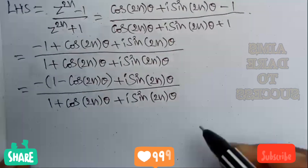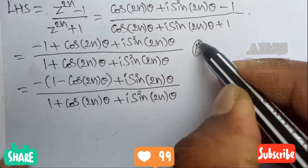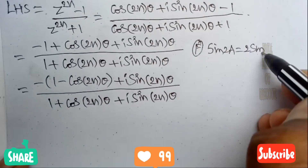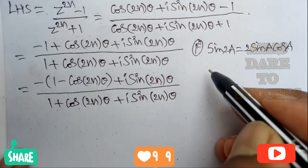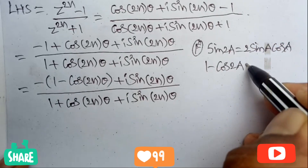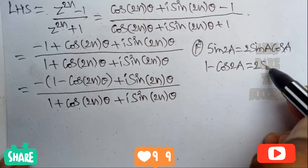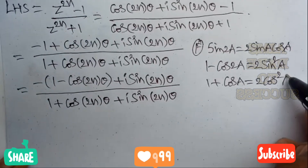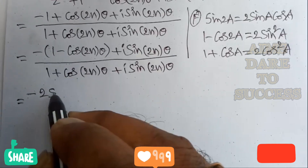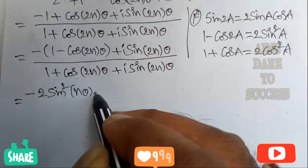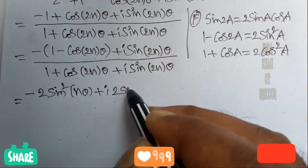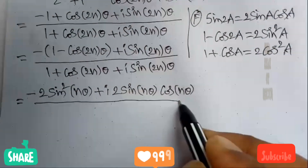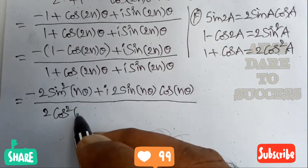Here I want to write three formulas from trigonometry. First formula: sin 2a equals 2 sin a cos a. Next: 1 minus cos 2a is equal to 2 sine square a. And one more formula: 1 plus cos 2a is equal to 2 cos square a. Substituting: minus 1 minus cos 2n theta equals 2 sine square n theta; plus i sine 2n theta equals 2 sine n theta cos n theta; divided by 1 plus cos 2n theta equals 2 cos square n theta.